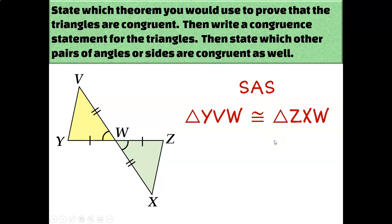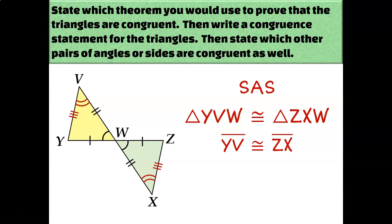Now that I've proven these two triangles are congruent, I can state that all their pairs of corresponding parts are congruent as well. For example, YV is congruent to ZX. Angle V is congruent to angle X, and angle Y is congruent to angle Z.